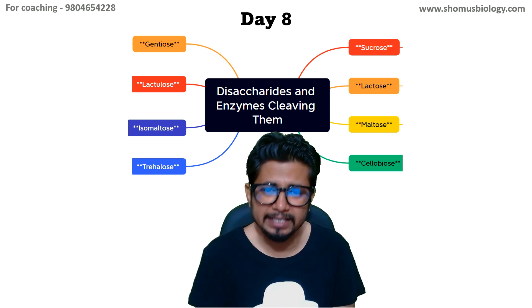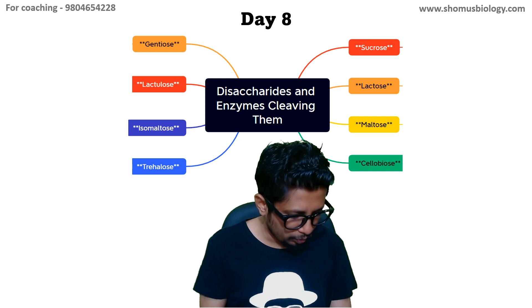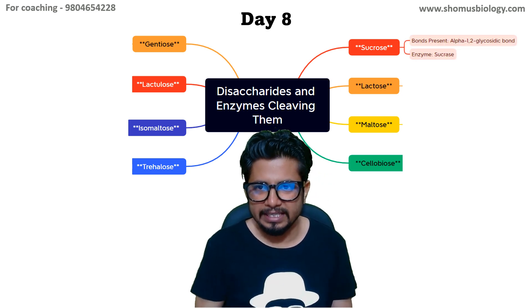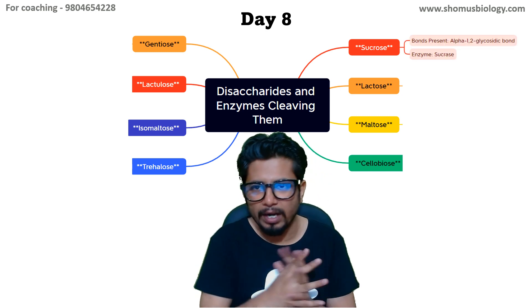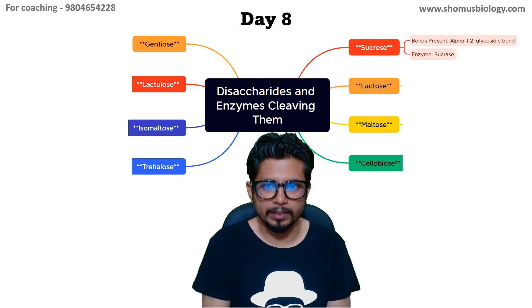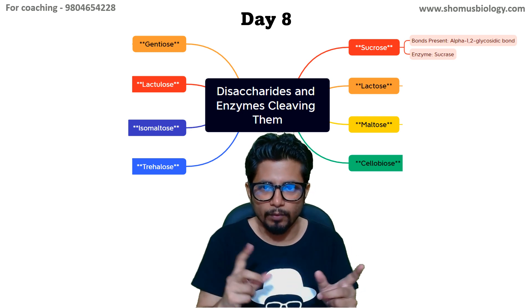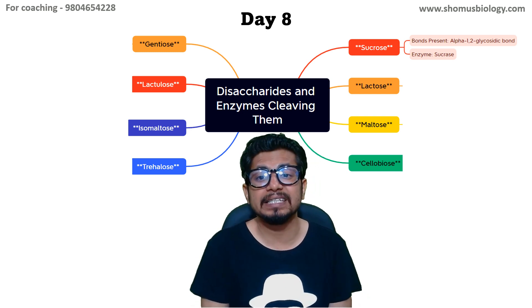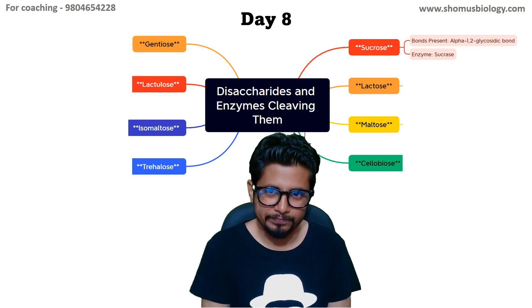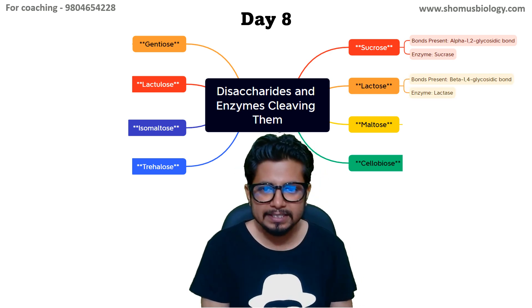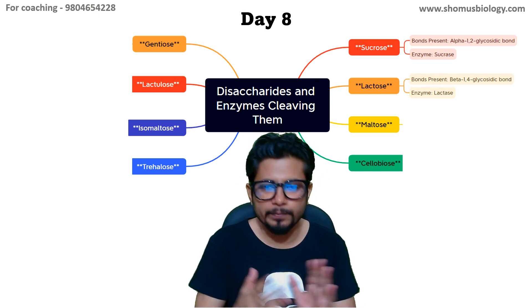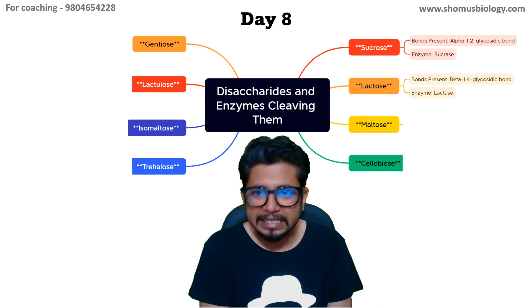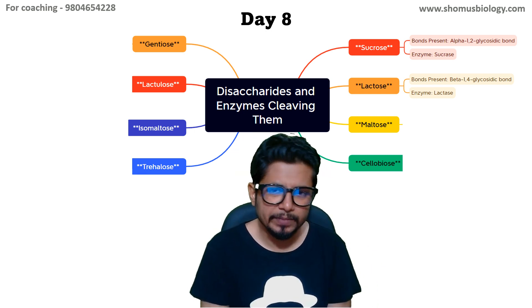For sucrose, the bond present is an alpha 1-2 glycosidic bond, cleaved by the enzyme sucrase. Next is lactose — the bond present is a beta 1-4 glycosidic bond, cleaved by lactase.